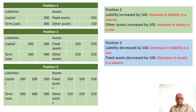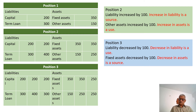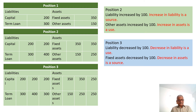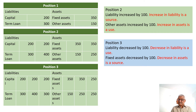Position 3: capital remains at 200, but the term loan which was 400 has been brought back to 100 — the company repaid 100. Any decrease in liability is a use. From where did it get that 100? Fixed assets reduced from 350 to 250, meaning the company sold fixed assets worth 100 — any decrease in asset is a source. The fundamental principle: increase in liability is a source; decrease in liability is a use. Increase in asset is a use; decrease in asset is a source.